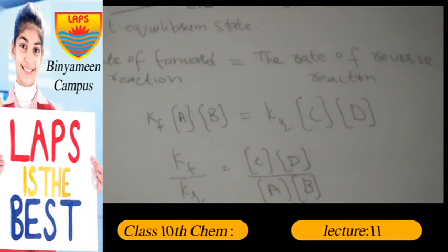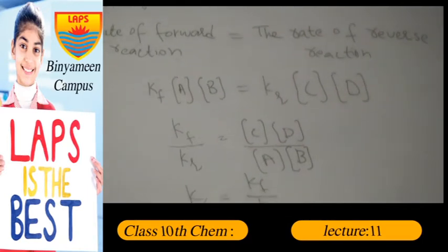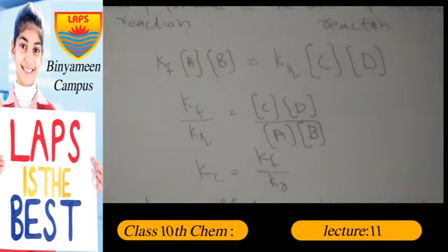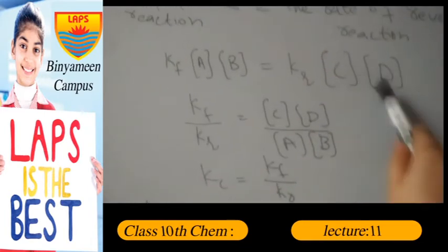At equilibrium state, the rate of the forward direction is equal to the rate of the reverse direction, and kf[A][B] is equal to kr[C][D]. And kf over kr value, this is equal to both values.